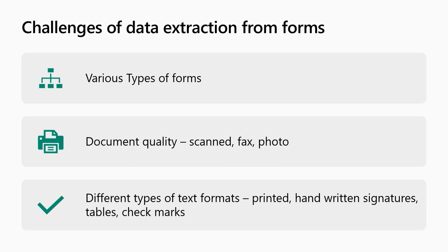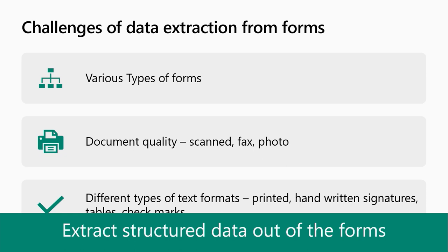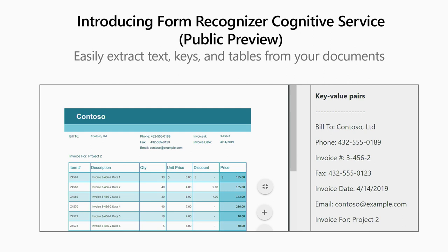There are a lot of challenges in extracting key value pairs and tables from forms. Documents can vary in quality — scanned, images, faxes, or text PDFs — and they can be printed or handwritten, with complex nested tables, merged cells, and tables spanning multiple rows. For that reason, we're introducing today the Form Recognizer Cognitive Service, which easily extracts keys and tables out of forms.